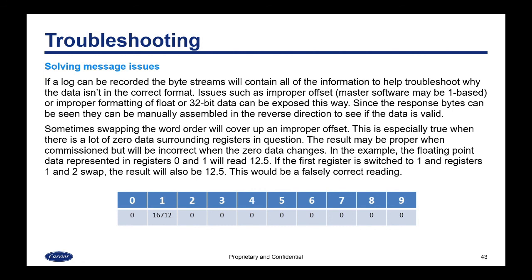Sometimes swapping the word order will cover up an improper offset. This is especially true when there is a lot of zero data surrounding the registers in question — the result may appear correct when commissioned but will be incorrect when the zero data changes. In the example, the floating point data represented in registers 0 and 1 will read 12.5 when put together. If the first register is switched to 1 and registers 1 and 2 are then swapped, the result will also be 12.5 — but this would be a falsely correct reading, and if the zero data in register 2 changed, you would not be reading the correct information.